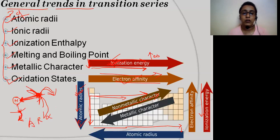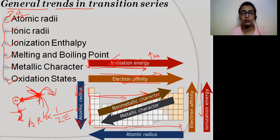Metallic character decreases as you go from left to right across the period, and increases from top to bottom. Conversely, non-metallic character increases left to right and decreases top to bottom. Just remember this relation.